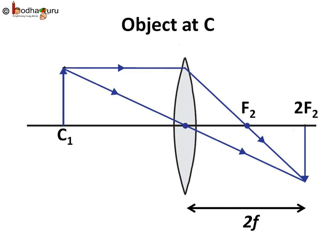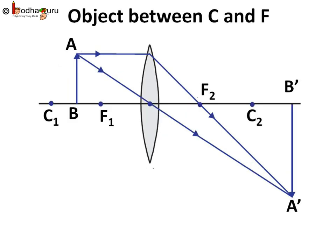Let us bring the object a little closer. When the object is placed between focal point and center of curvature, we get a real, inverted, magnified image on the other side beyond center of curvature.